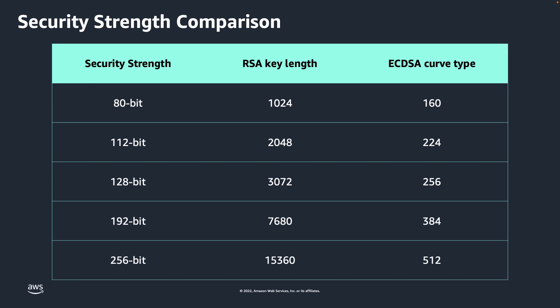Note that only RSA 2048 and ECDSA P256 and P384 are currently issued by ACM. However, ACM does support the import and usage of other certificate types listed in the table. ECDSA provides a higher security strength for a given key length than RSA, but does not add performance overhead. For example, ECDSA P256 is as performant as RSA 2048 while providing security strength that is comparable to RSA 3072.